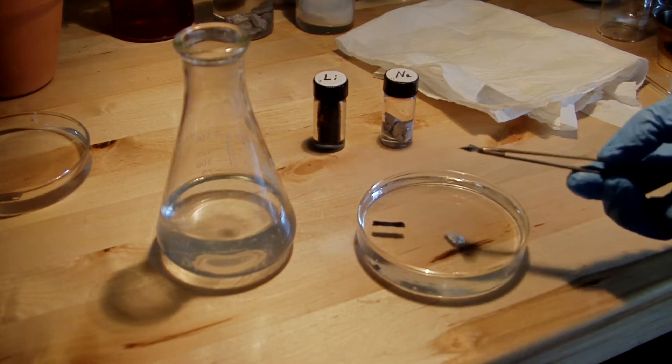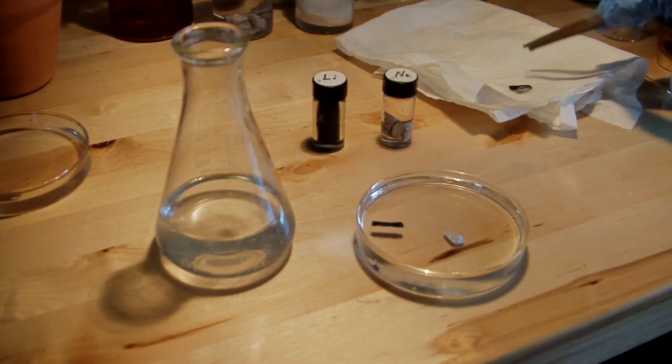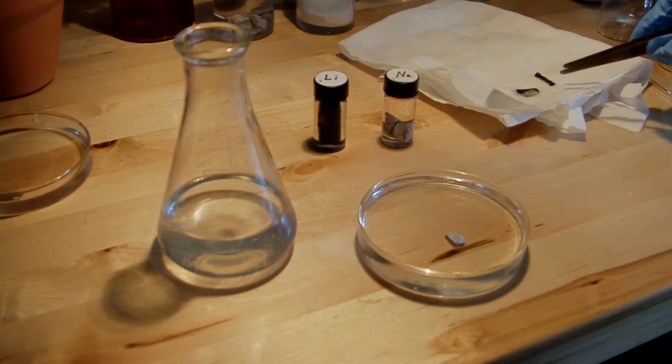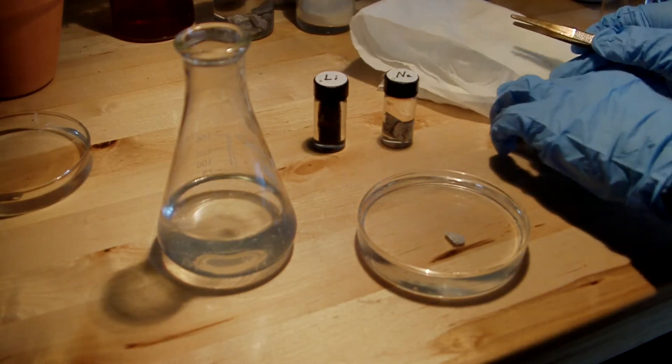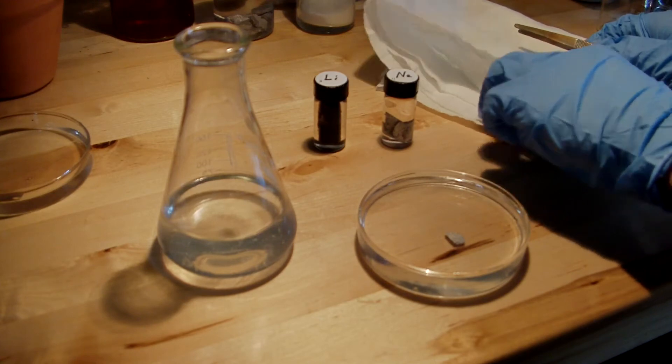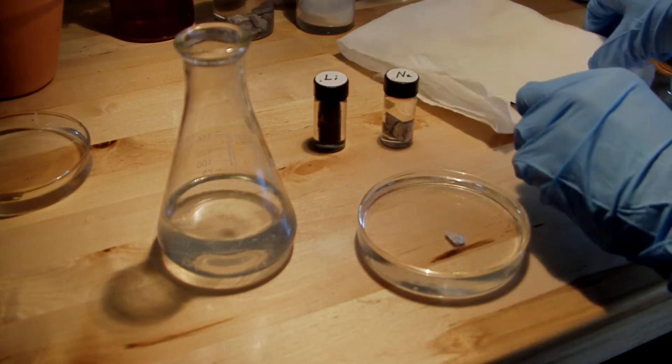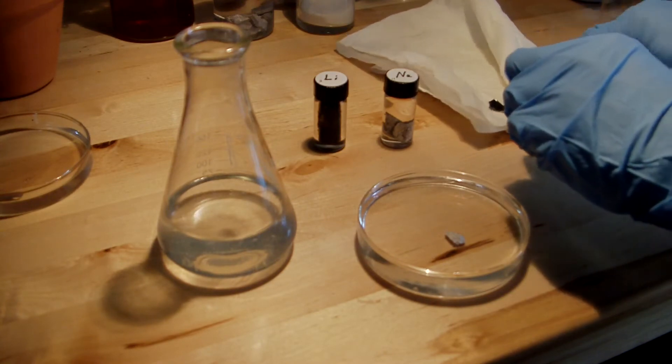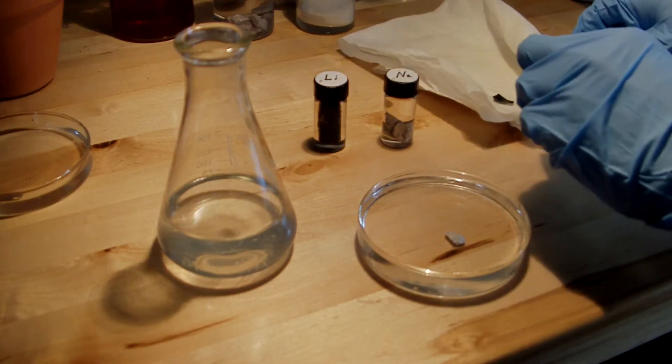So you can see the lithium is in a form that's just a very thin foil. And it looks darker but that's only because it's more tarnished. Both of these metals, if left in air, will very rapidly tarnish and form hydroxides on their surface.